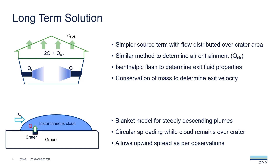The second improvement is to introduce a gas blanket model for steeply descending plumes, such as the one we saw in the COSHA experiment. We're going to use an instantaneous cloud which is being fed by the flow from the crater and is then free to spread in all directions. This should allow us to better represent the near-field behaviour of these experiments, including potential upwind spreading of the cloud, which we currently don't predict.